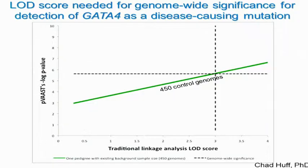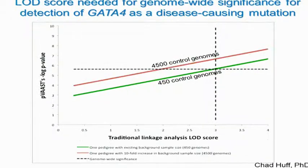The issue of power has come up a number of times. This is a comparison that Chad Huff has done, about to be published, looking for a disease-causing gene in a multi-generational pedigree using VAST. The power using sequence data to get genome-wide significance is about the same as a traditional LOD score of three in a family if we're using 450 control genomes. But if we increase that to 4,500 control genomes, we can get genome-wide significance with a LOD score less than two. Having a large sample of controls helps us identify which alleles are truly rare and substantially increases our power.